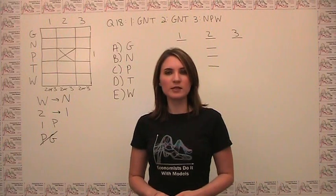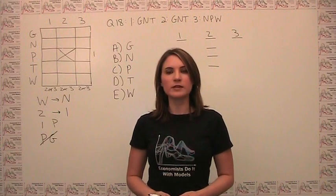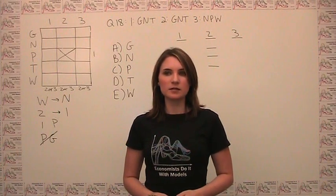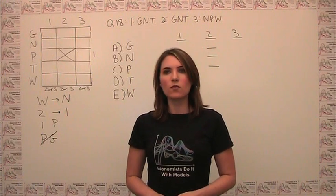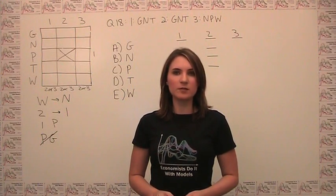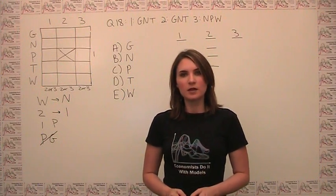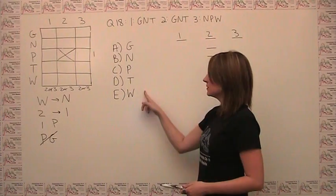Question 3 in this game, or question 20 in the section overall, reads, if center 2 recycles three kinds of material, then which one of the following kinds of material must center 3 recycle? And then you have the answer choices as follows.